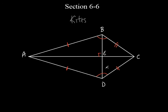Now, the diagonals don't actually bisect each other. But the one connecting the two equal angles — diagonal BD — is actually being bisected by the other diagonal. So BE equals ED, meaning E is actually the midpoint of BD. But AE and EC are not equal to each other — the diagonal connecting the two unequal angles is not bisected. It's the diagonal that connects the two equal angles that gets bisected.